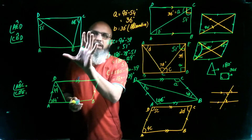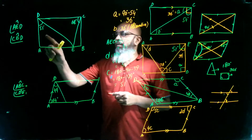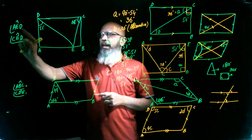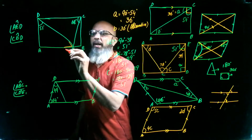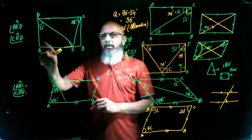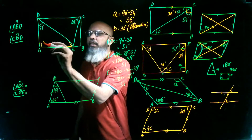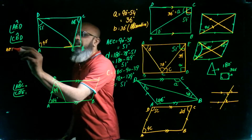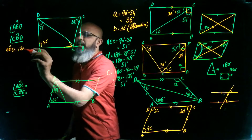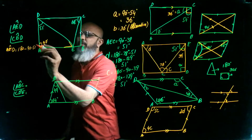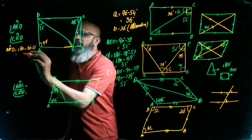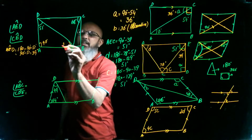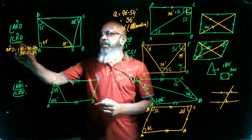Next question: rectangle ABCD has a triangle inside and we need to find angles AED and CED. Angle A is a right angle of 90 degrees. To find angle AED: angle AED equals 180 minus 90 minus 51, which gives 39 degrees.